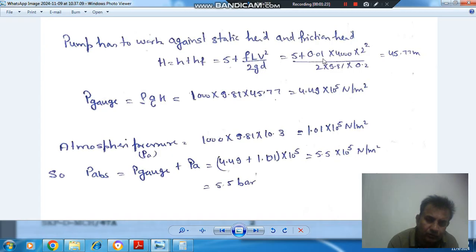So F is 0.01, that is given. Length is given as 4 kilometers, so that is 4000. V is 2 meter per second and D is 0.2 or 200 mm.